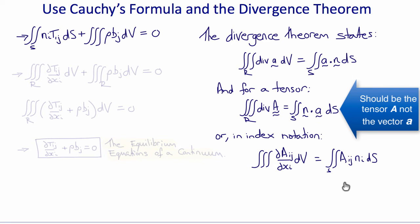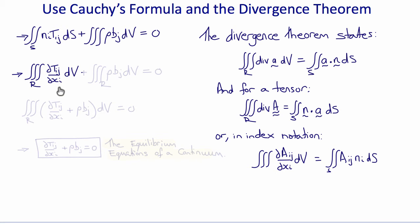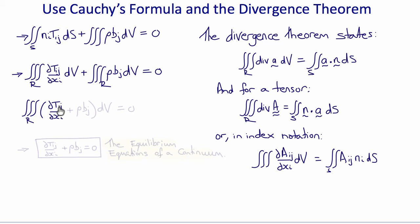Applying this theorem to our expression, the surface integral of N_i T_ij becomes the volume integral of del T_ij / del X_i with respect to V, and the other term remains unchanged: rho B_j dV. Now we have two volume integrals over the same region, so we can combine them into a single integrand: del T_ij / del X_i plus rho B_j with respect to V, equal to zero.